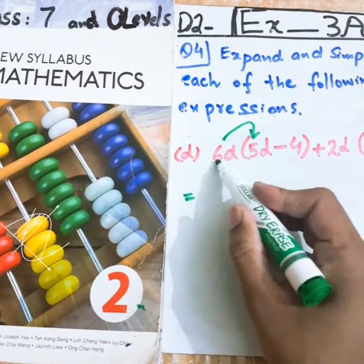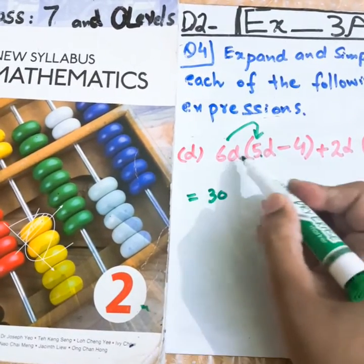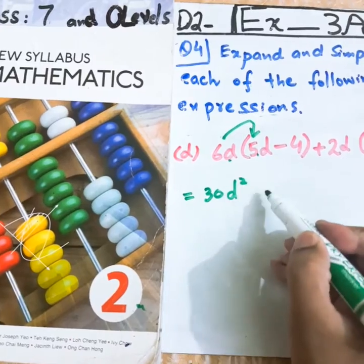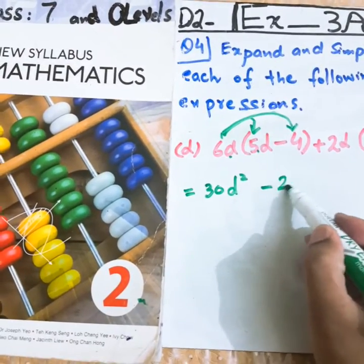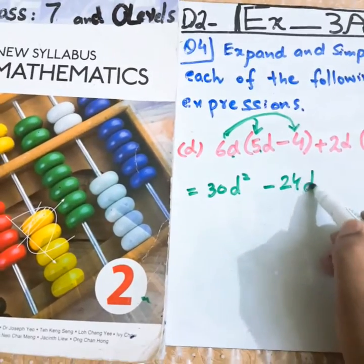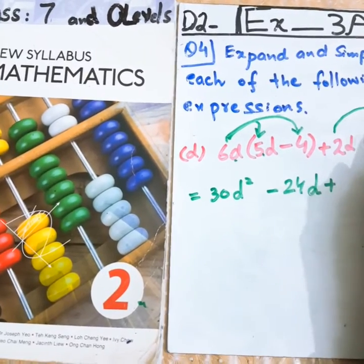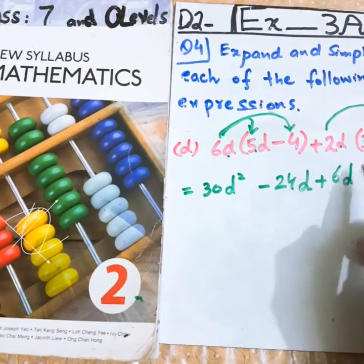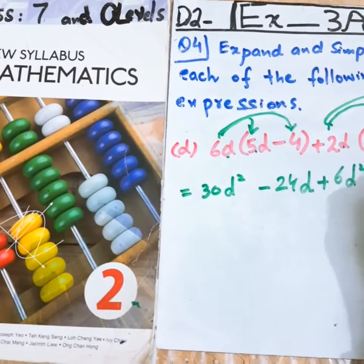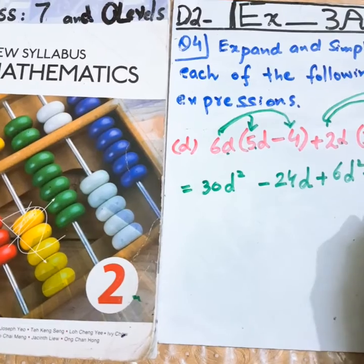6D will be multiplied by 5D. 6, 5 times 30. And D times will be D squared. 6D will be multiplied by this 4. 6, 4 times 24. 4 and D will come as it is. 2D will be multiplied by this. 3, 2, 3 times 6. D, D times D squared. 2 will be multiplied by minus 2. 2, 2 times 4 and D.